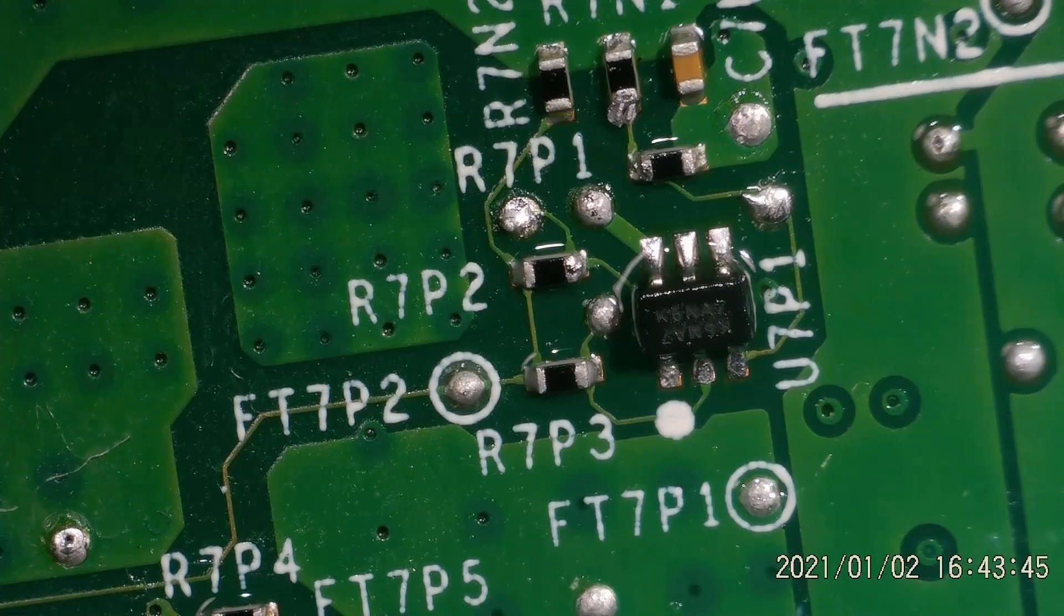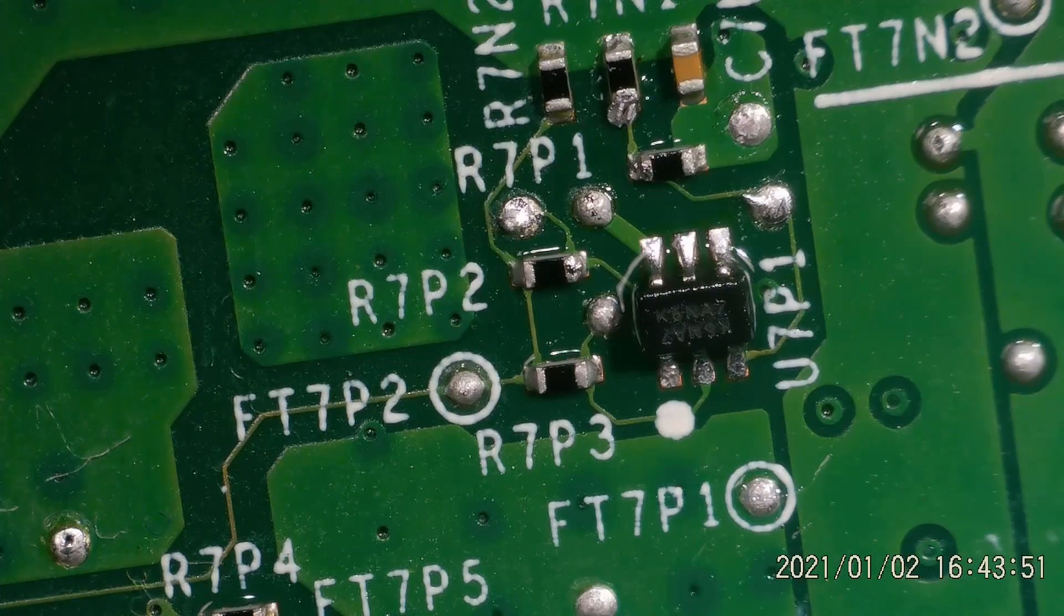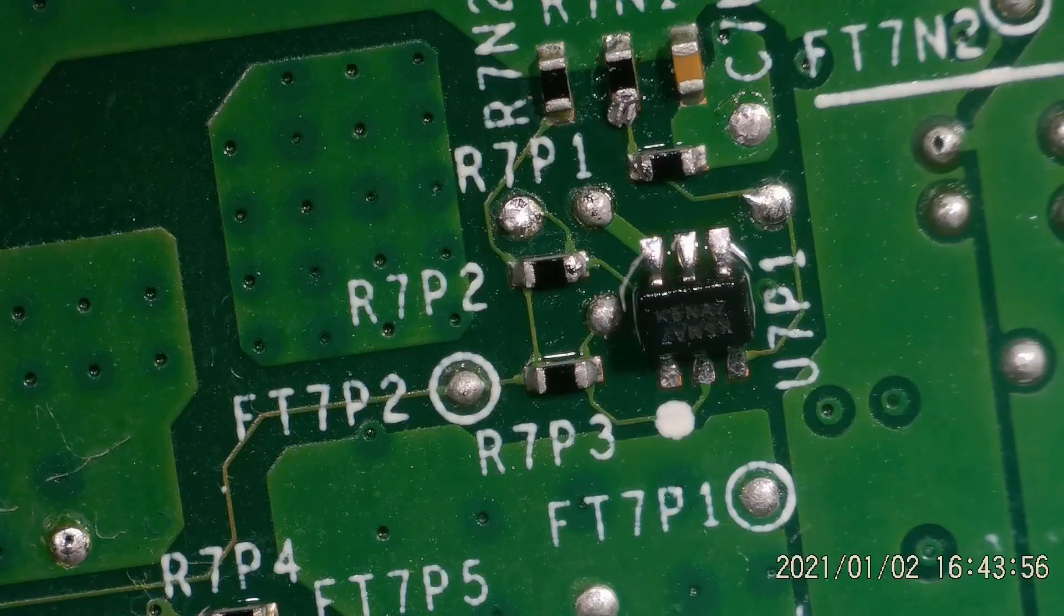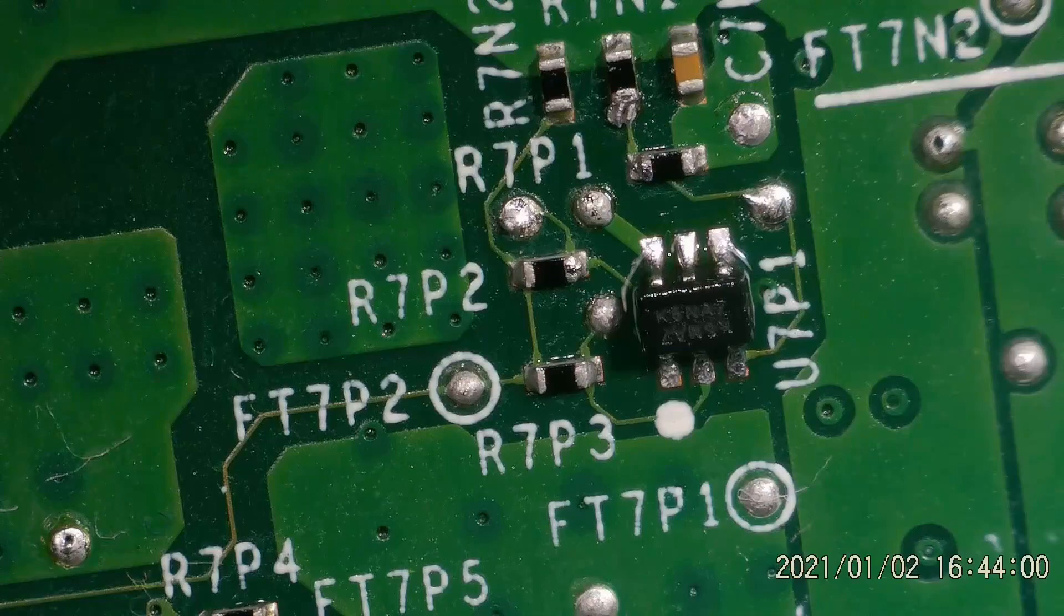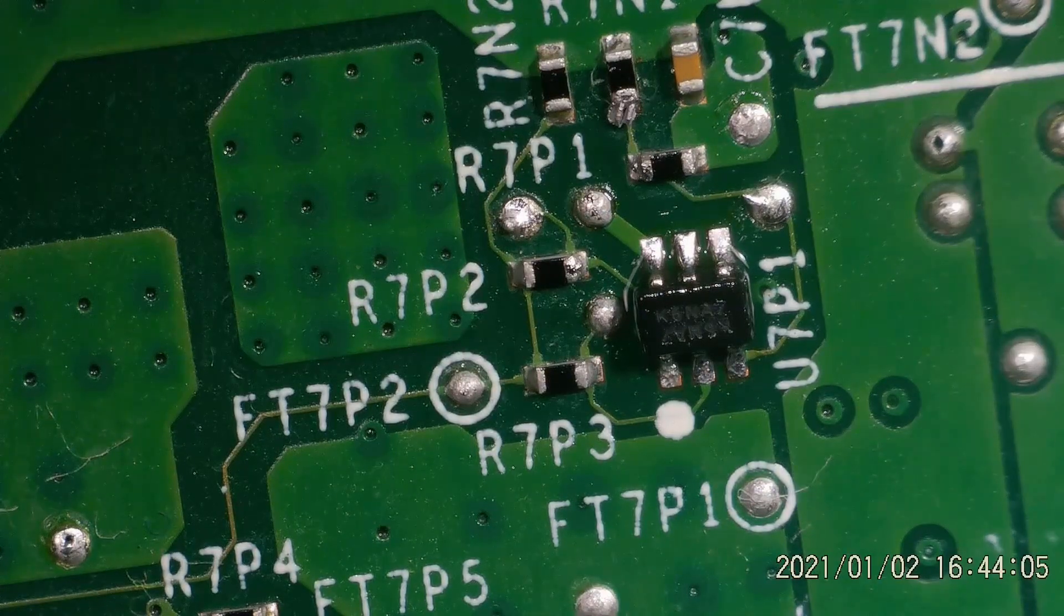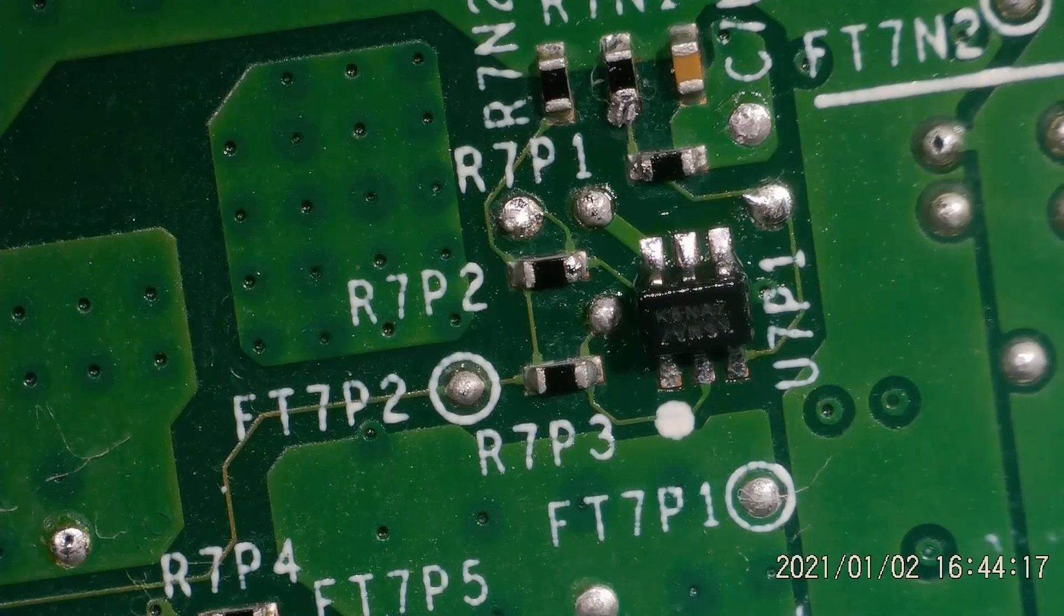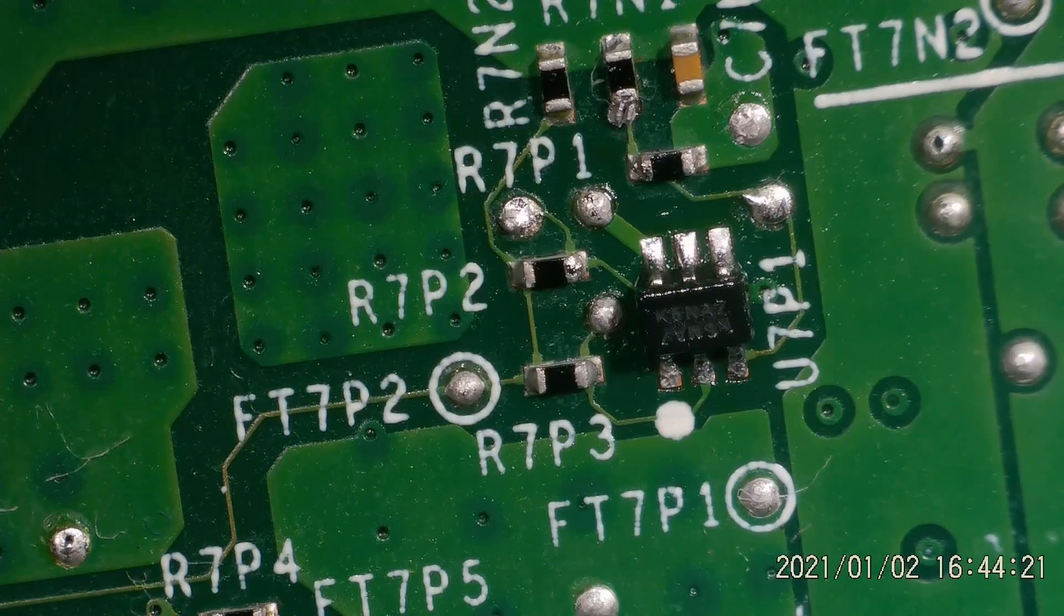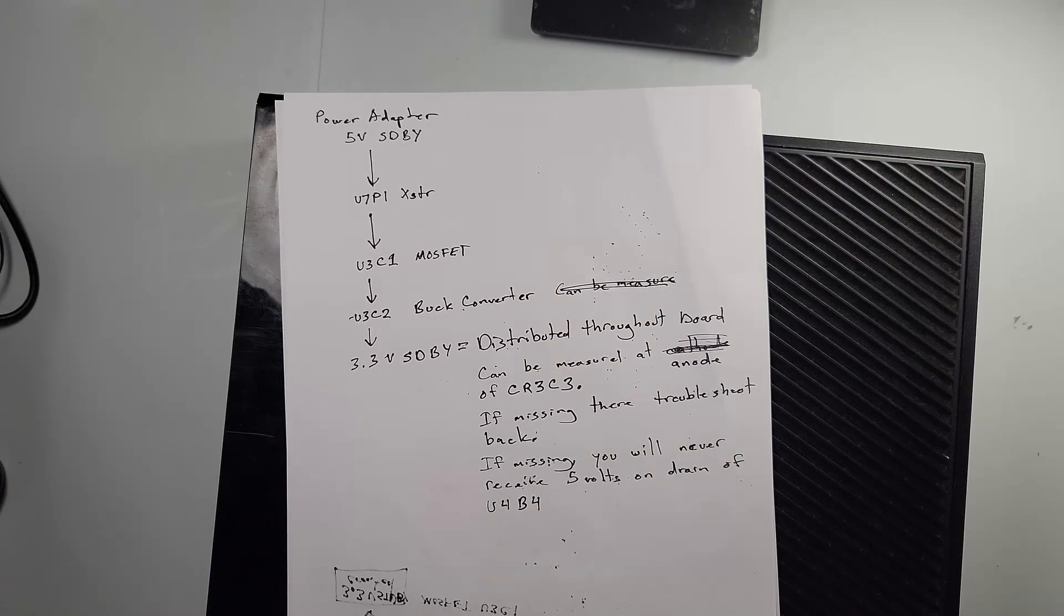And to my surprise it powered right up and it's been working ever since. So I don't know what I did. I don't know if it was a cold solder joint around U7P1, a cold solder joint around one of those resistors, I'm not sure. But something I did when I connected that external transistor got this thing working like it's supposed to. I don't know why, but it is fixed now.